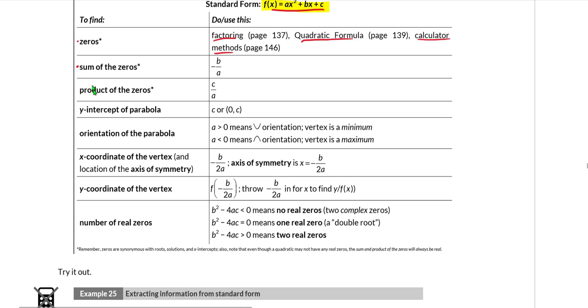Remember that standard form is that ax squared plus bx plus c. I've said several times that that form is often the one that students are most familiar with. So what we're going to do is we're going to run very quickly through this table here and we're going to talk about all of the things that we can do with standard form, all the information we can extract from standard form. We already talked about how to find zeros from standard form. We said that there were several methods: factoring, the quadratic formula, the calculator methods. We can determine the sum of the zeros by taking negative b over a. We can determine the product of the zeros by taking c over a.